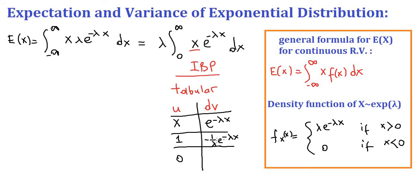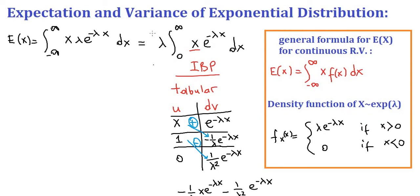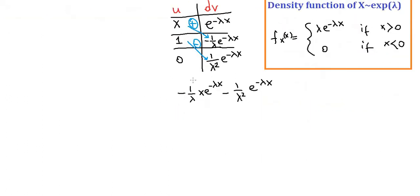If we take the antiderivative one more time it will be −(1/λ) × −(1/λ), which is (1/λ²)e^(−λx) — the power does not change. Now we are going to cross-multiply with alternating plus and minus signs. We obtain x times −(1/λ)e^(−λx), which is −(1/λ)xe^(−λx), and then 1 times (1/λ²)e^(−λx) subtracted, giving −(1/λ²)e^(−λx). We must not forget that we had lambda in front of the integral sign.